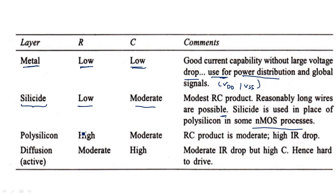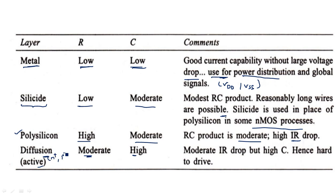Polysilicon has high resistance and moderate capacitance. The RC product is moderate, so the time delay is also moderate. High resistance causes a high IR drop. If capacitance were high rather than moderate that would be worse, because capacitance increment has a larger effect than resistance; but since capacitance is moderate, polysilicon is somewhat acceptable for short or gate connections.